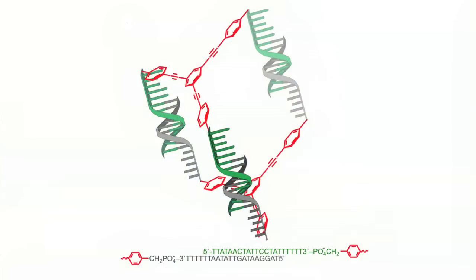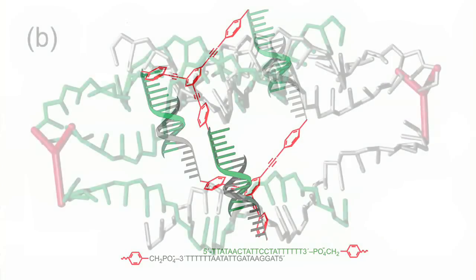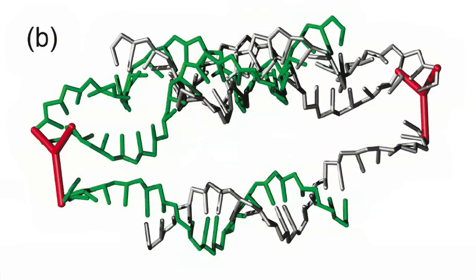Hi, my name is Tatiana Prytkova. I am a postdoctoral fellow in the Schatz Group. I will tell you today about a project related to the melting properties of small molecule DNA hybrids, SMDH. The figure shows the structure of the SMDH complex. In this structure, two small organic molecules rather than nanoparticles are linked by DNA. In this case, hybridization produces a dimer of the two molecules rather than an extended aggregate.